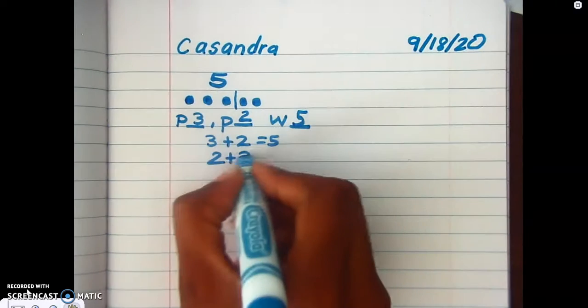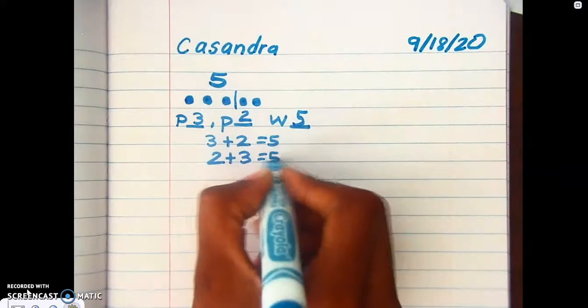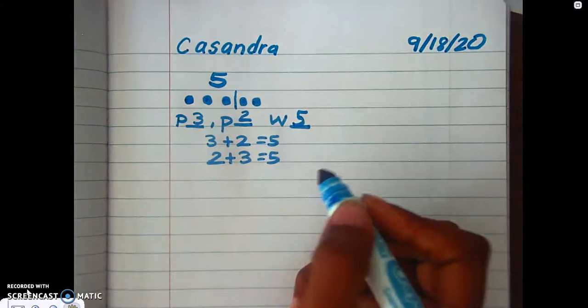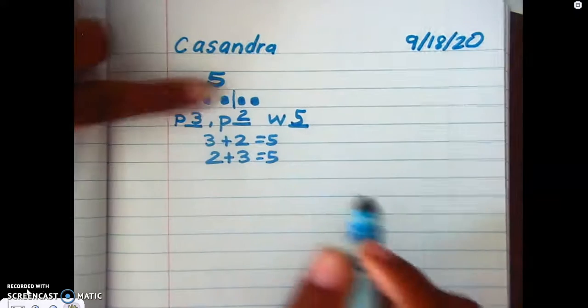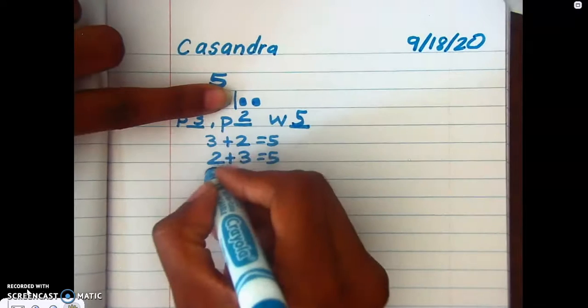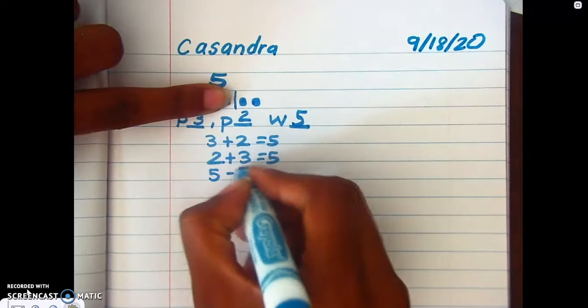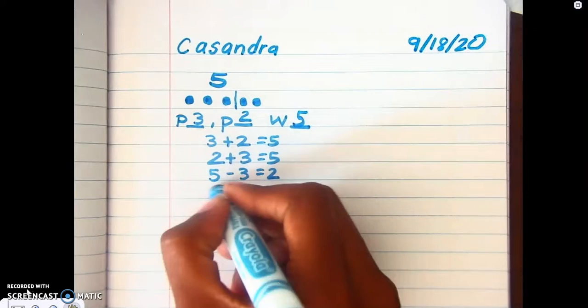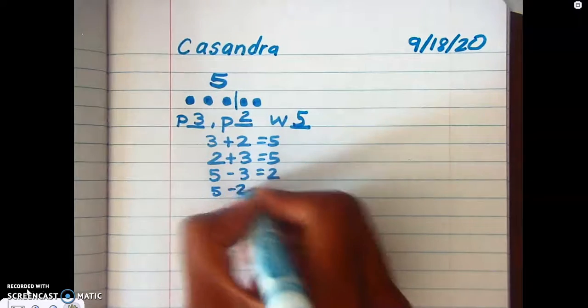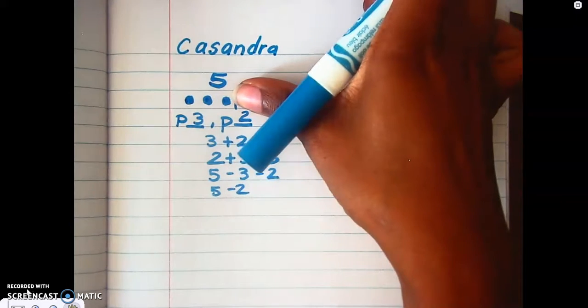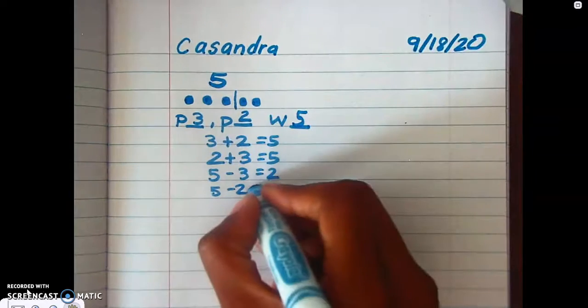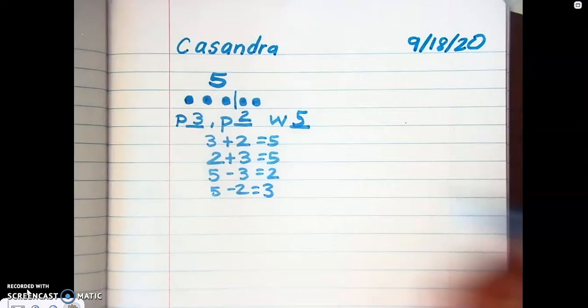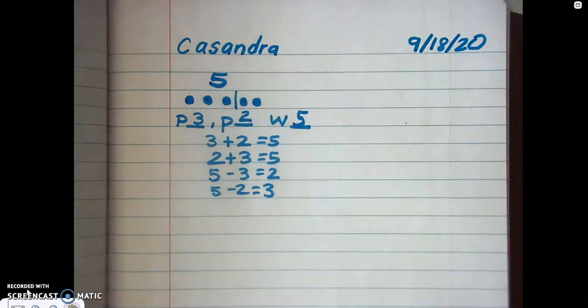Okay, now if I have five and I take away three, the only part that's left is the two. But if I have five and I take away two, the only part that's left is the three. This is my fact family, okay?